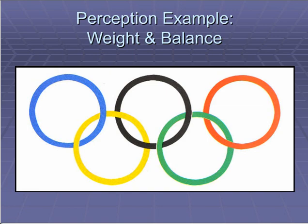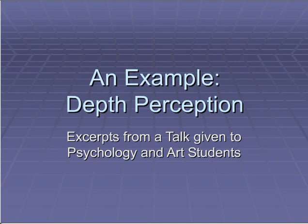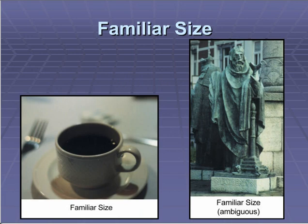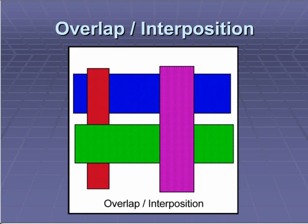I want to talk about depth perception — this is an excerpt from a talk I give to psychology and art students about how you view the world around you. What are the monocular cues of depth perception? We talk about familiar size — basically, what you know about an object will allow you to color how you see it. We talk about relative size — how big an object is will reflect where it is in space. We talk about overlap and interposition — things that occlude other things tend to be in front of them. We talk about linear perspective — we expect to see lines going back into space.